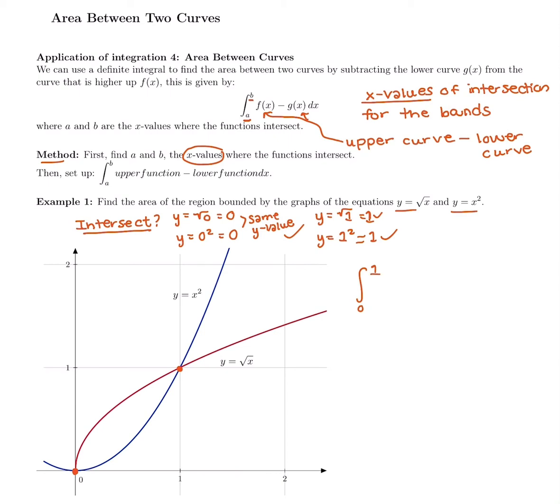Once you figure out the x-values where they intersect, we are plugging in the upper curve minus the lower curve. Let's say you're not a visual person and you are wondering which one of these is the upper curve. Which one's higher, the square root of x or x squared? So let's figure out which one's the upper curve.